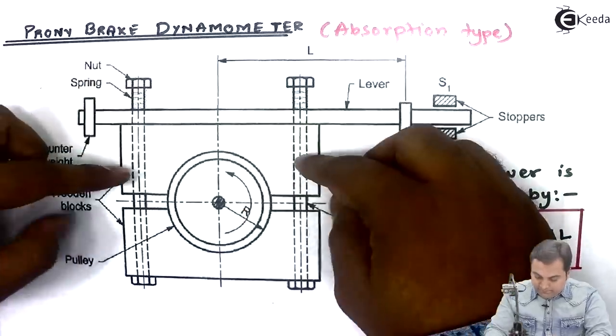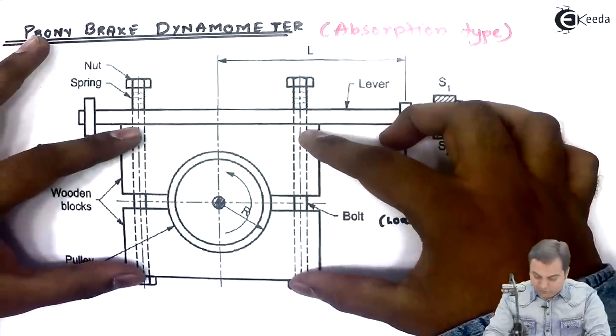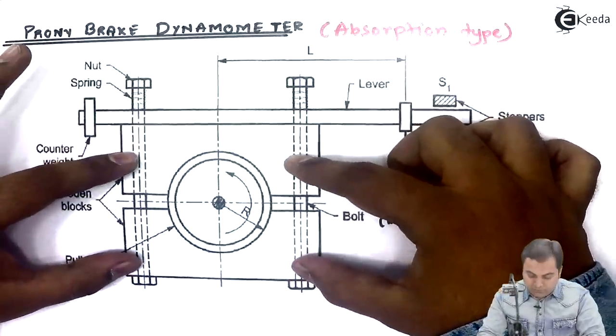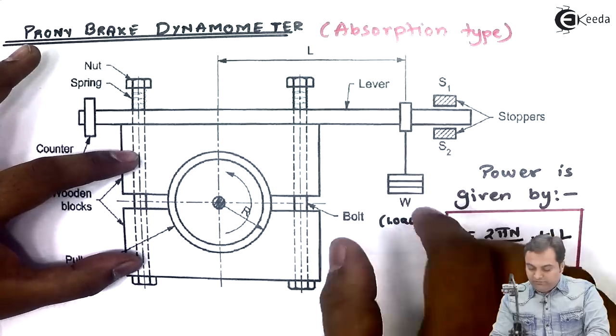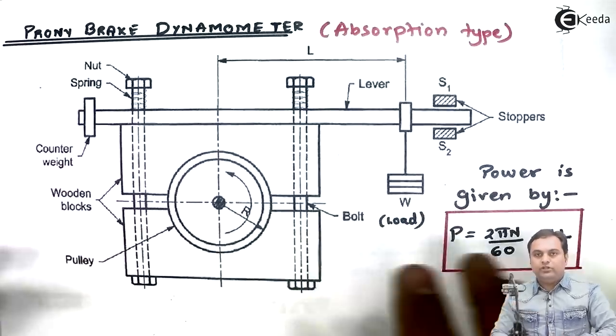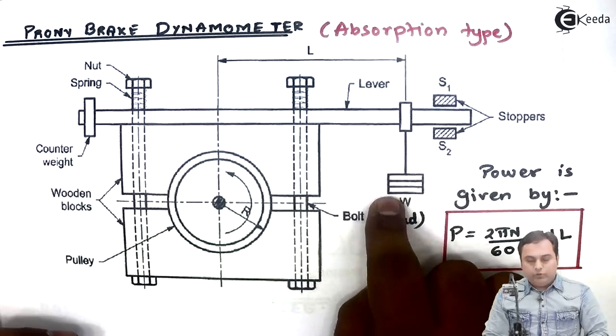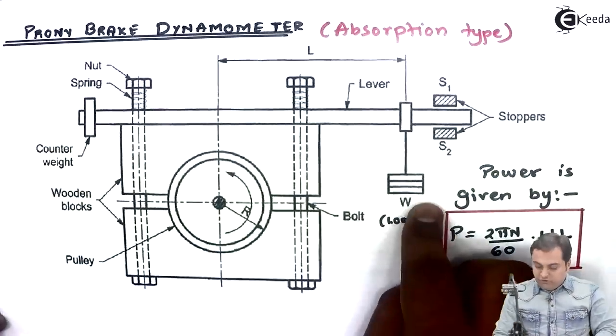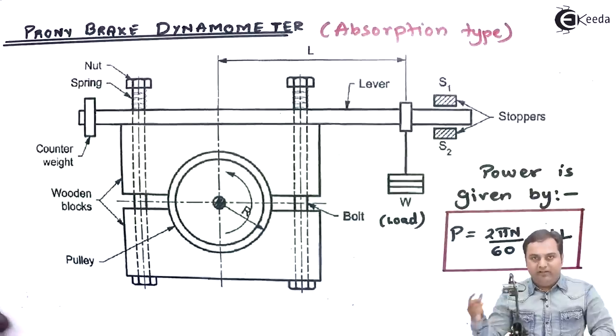Along with that, the clamp - the wooden clamps or wooden blocks - will be moving down, this upper block will be moving down. As we increase the value of load, the wooden blocks come closer to the brake drum, and once the load value has reached a value where it will be just coming in contact with the brake drum, the brake drum stops.